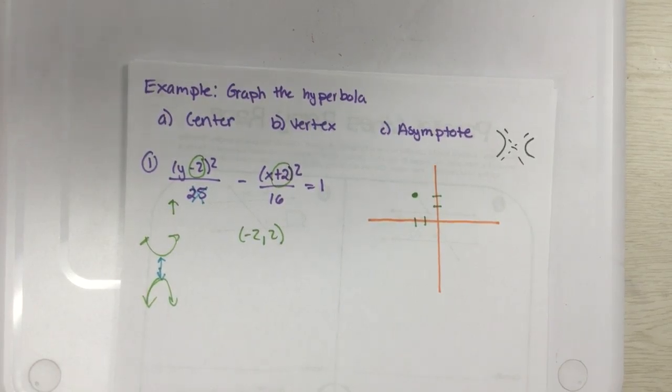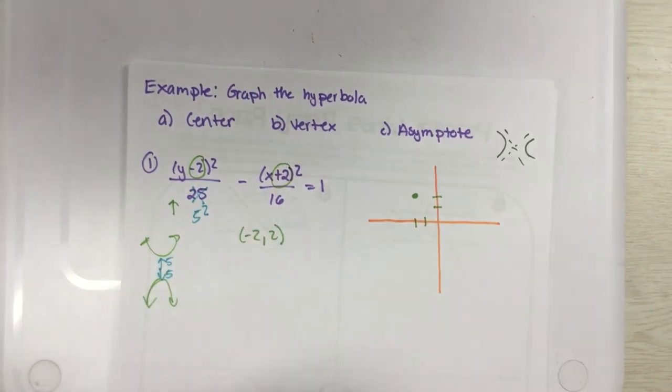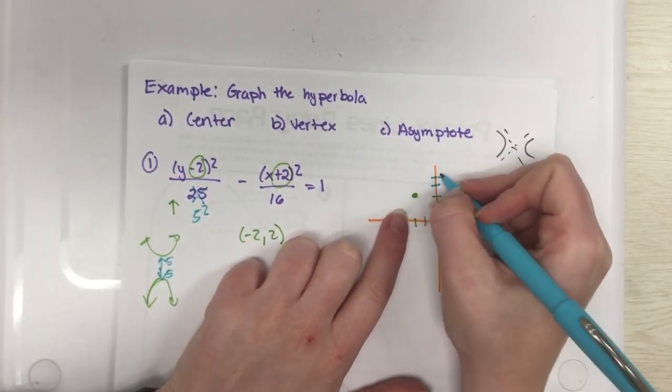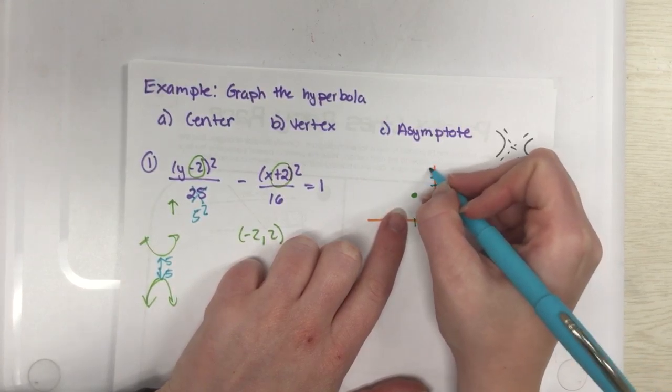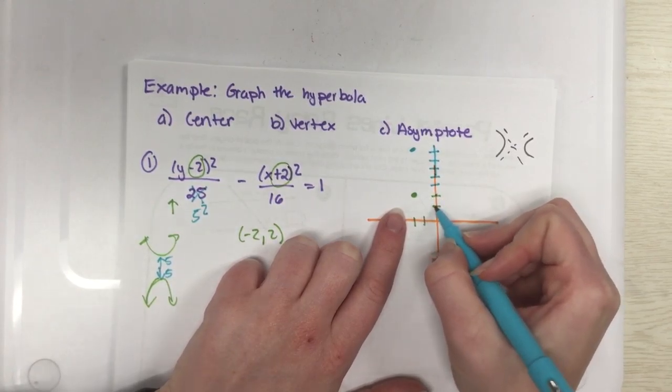Now to do a vertex, this is going to be up-down, so from my center I need to go up and down. But remember this isn't 25 up and 25 down, this is 5 squared so that means I need to go up 5 and down 5.